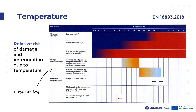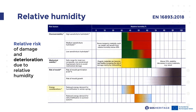In this example, taken from the latest European standard providing specifications for the location, construction, and modification of buildings intended for storage or use of heritage collections, the risk due to temperature is addressed based on both the chemical stability of the materials constituting the objects and the relative energy demand associated with maintaining those thermal levels. The same approach applies to the relative risk of deterioration due to relative humidity of the air, where mechanical stability and the risk of mold are considered together with chemical stability in terms of material sensitivity to hydrolysis. Whenever managing environmental conditions for cultural collections, conservation specialists should be consulted to identify proper temperature and relative humidity ranges for specific heritage materials.